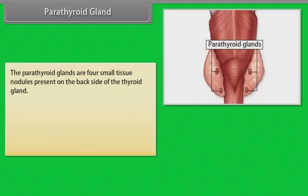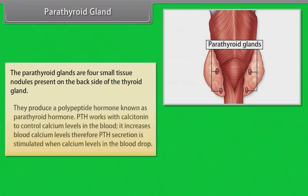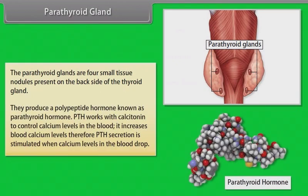The parathyroid glands are four small tissue nodules present on the backside of the thyroid gland. They produce a polypeptide hormone known as parathyroid hormone (PTH). PTH works with calcitonin to control calcium levels in the blood; it increases blood calcium levels. Therefore, PTH secretion is stimulated when calcium levels in the blood drop.